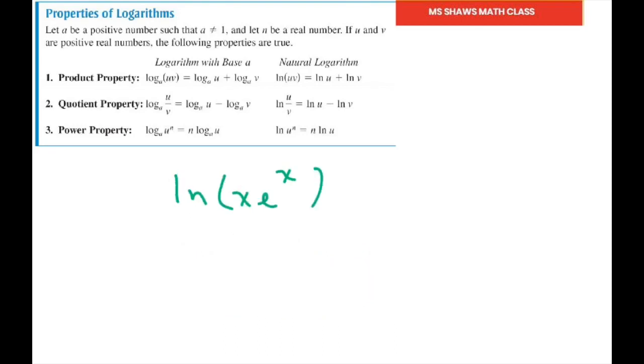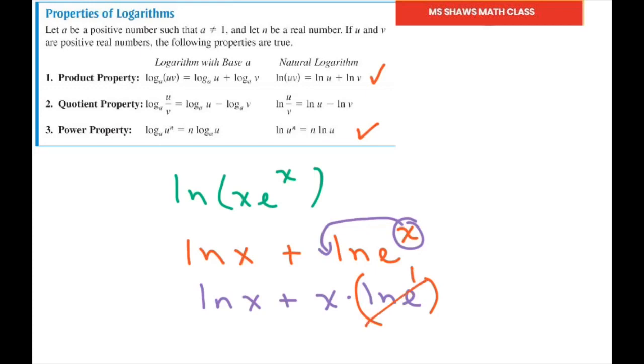And the next one is this one. So we're going to use the product property. So we have ln of X plus ln of E to the X. Now we're going to use our power property on this one. So we have copy ln of X plus, move this in front, get it out of the exponent, x times ln of E. And ln of E equals 1. So that's just going to be 1 times x. So your final answer is ln of X plus X.